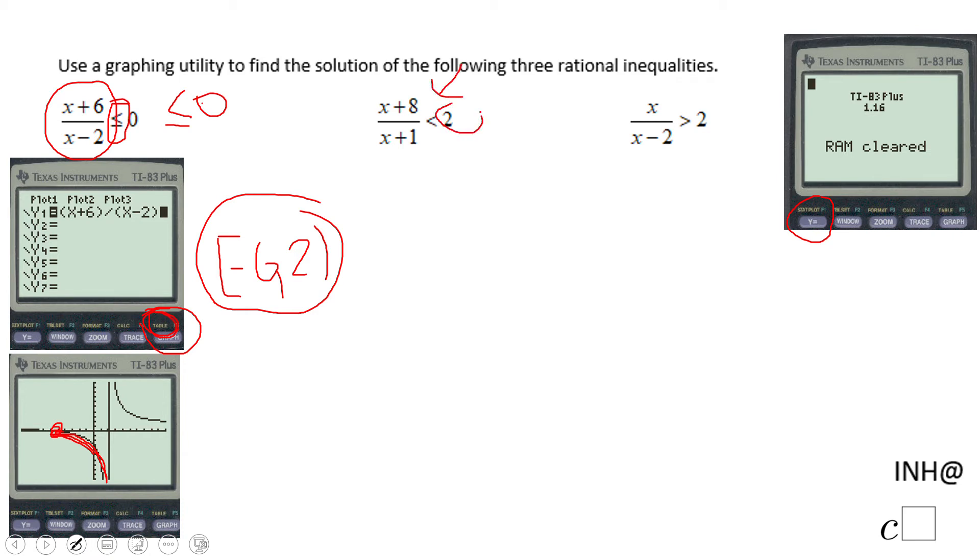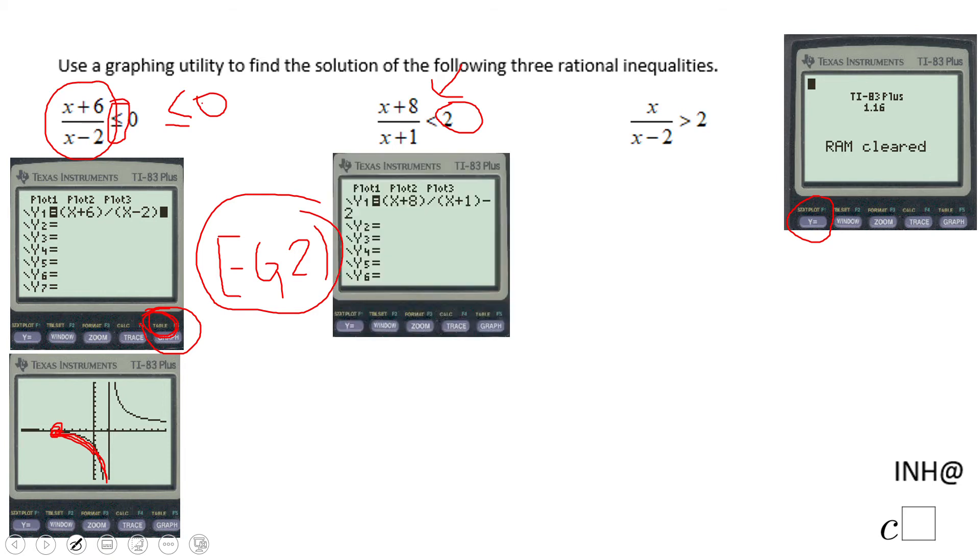Let's go to the second inequality, which is a little bit different because we have less than two. What you really want to do here is subtract two on both sides, and that's the expression you get on the left side. That's the one you want to put in your calculator so you can compare with zero.